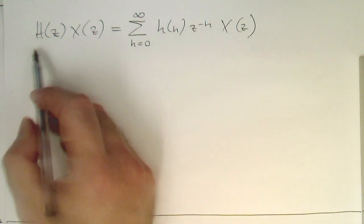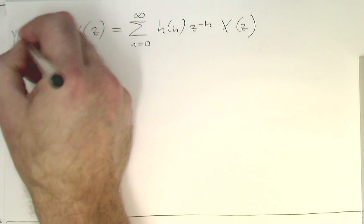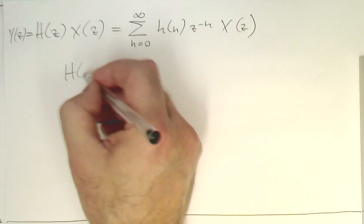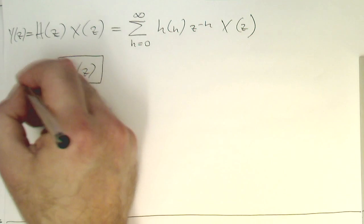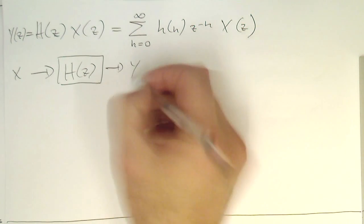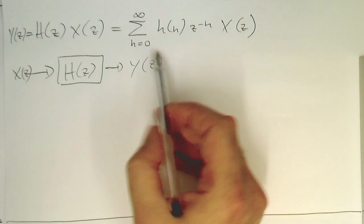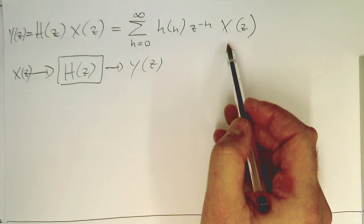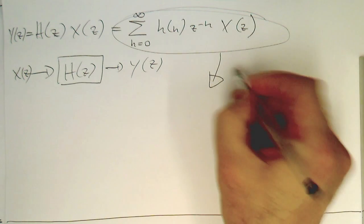This is our output Y(z). Remember this was our box here, H(z), and this is filtering our signal X and we're getting our signal Y(z) out there. So now this gives us a direct recipe of a data flow diagram here.